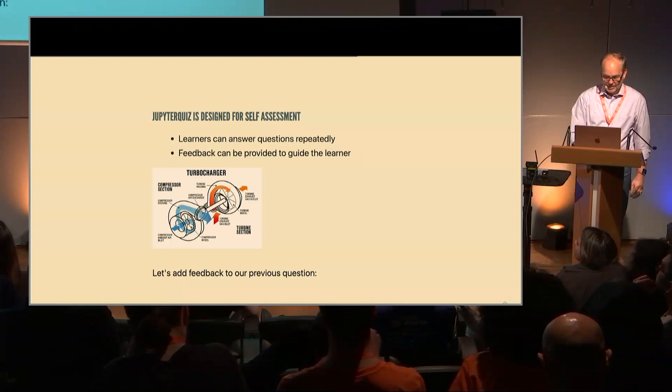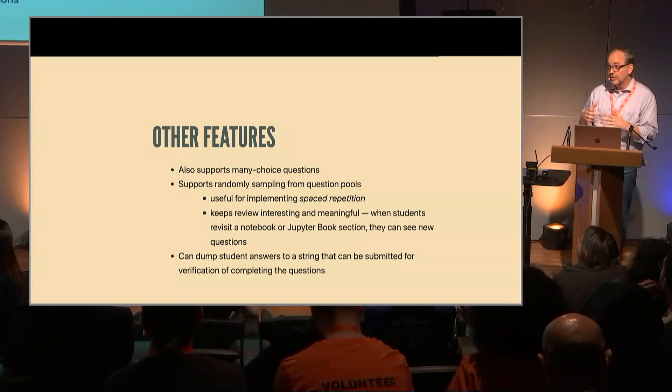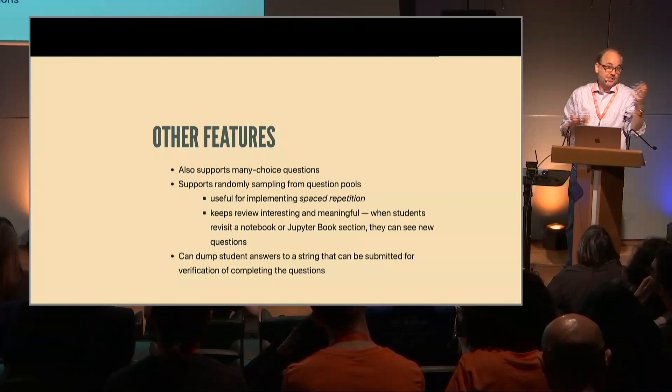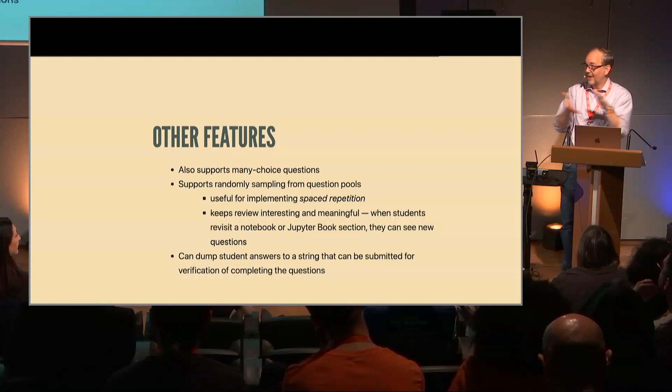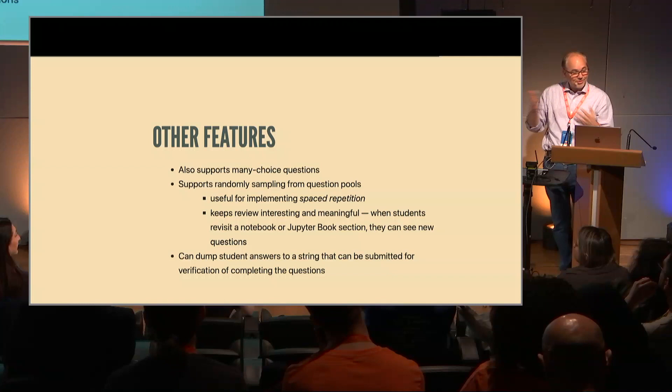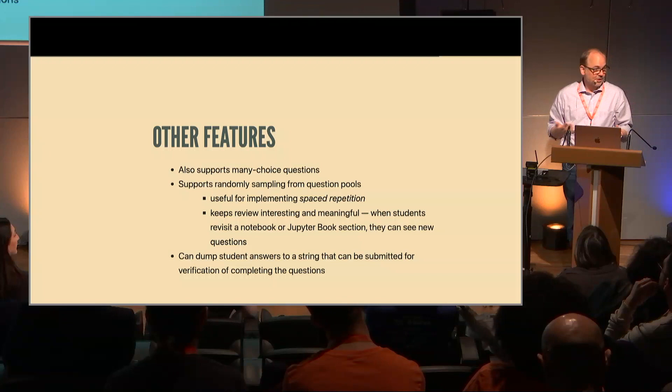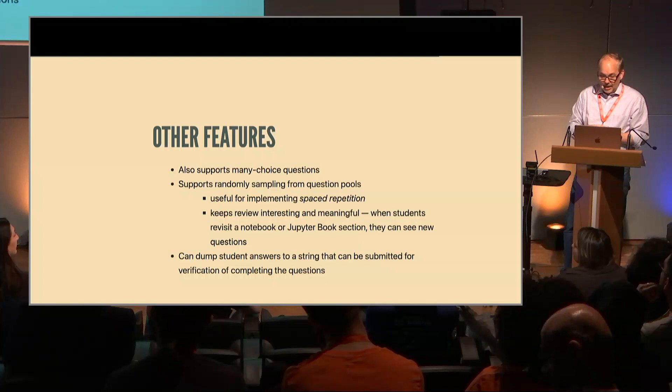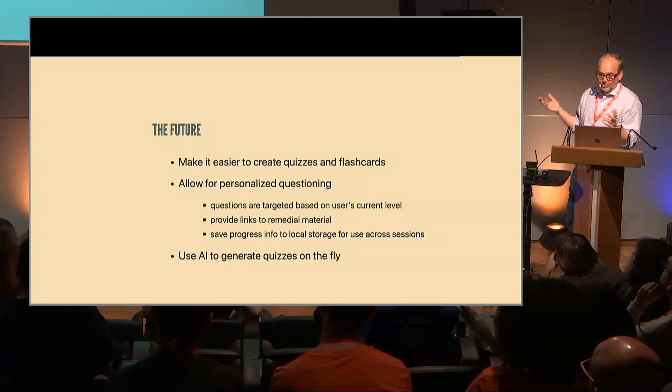It also supports many choice questions. It allows random sampling from the question pools. And the way I plan to use this in my book is you get all the questions or some sample of random questions in one chapter. The next chapter has a review section for the previous chapters and the number of questions it selects from the previous chapters sort down and down as you go through the book. So you get more review of the things that you recently saw and less review of things you saw further back. It helps keep the review interesting and meaningful. Each time the student visits the page of the book, they get one set of questions. Come again, get another set of questions. So they can review things and not always see the same thing.